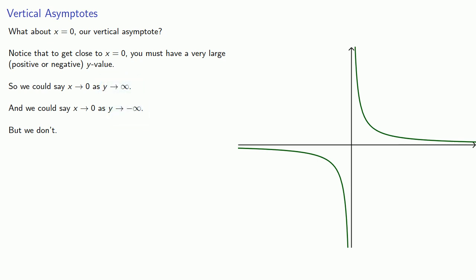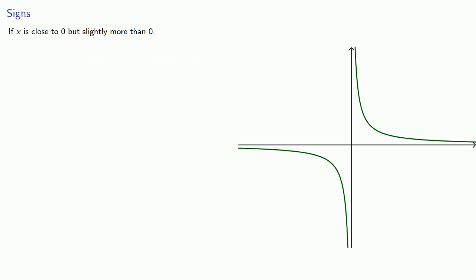So we'll introduce more notation. If x is close to 0 but slightly more than 0, then we're in this portion of the graph, and y is very large and positive. So we write: as x → 0⁺ (that's our plus, meaning stays a little bit more), y → ∞.